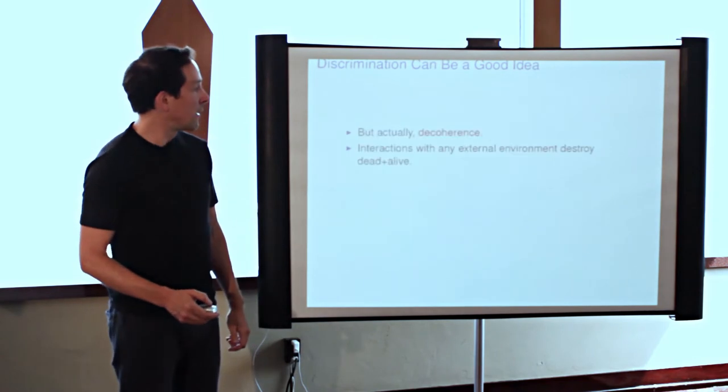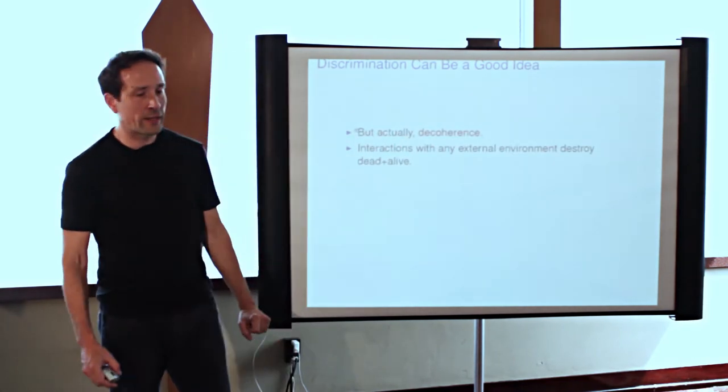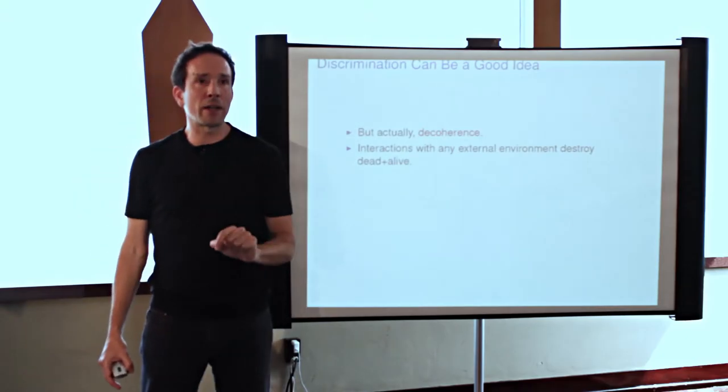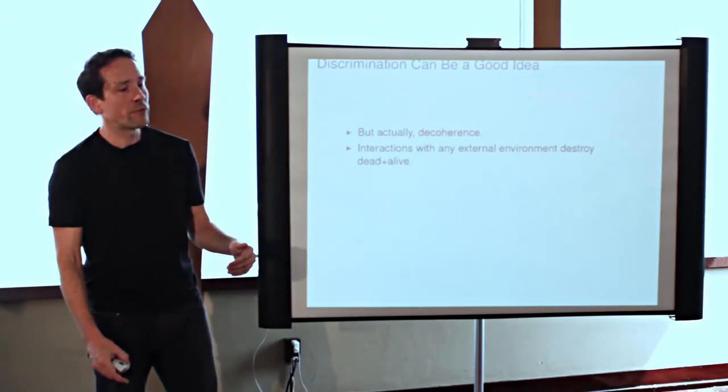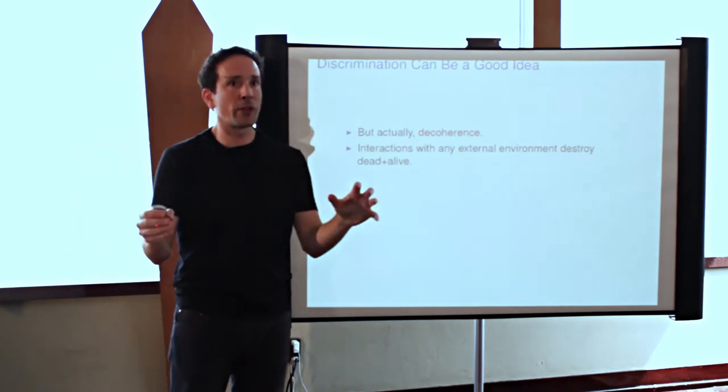It's very easy to explain why you don't see such a state. You don't need any fancy conscious observers. You just need one light particle to bounce off that cat. And you not keeping track of that light particle is enough for that cat to be in a state which is either dead or alive, but definitely not the sum of the two.